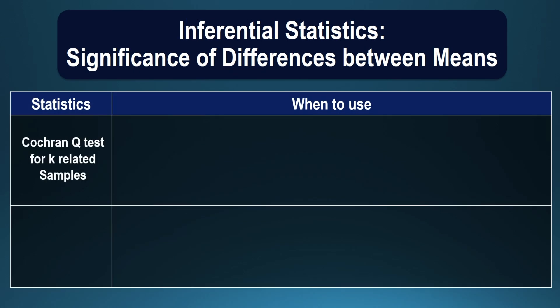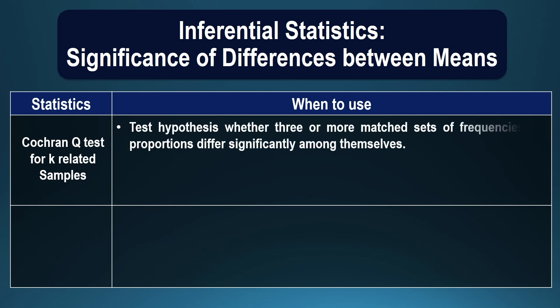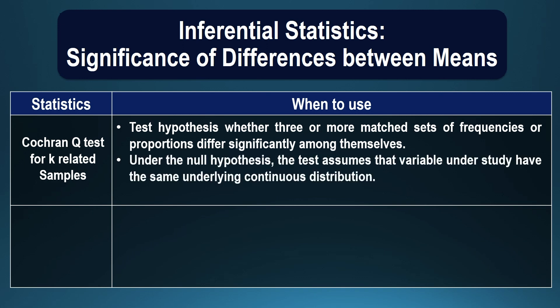The Cochran-Q test for k related samples can be used to test the hypothesis whether three or more matched sets of frequencies or proportions differ significantly among themselves. Under the null hypothesis, the test assumes that the variable under study has the same underlying continuous distribution, and it requires ordinal measurement of the variables.